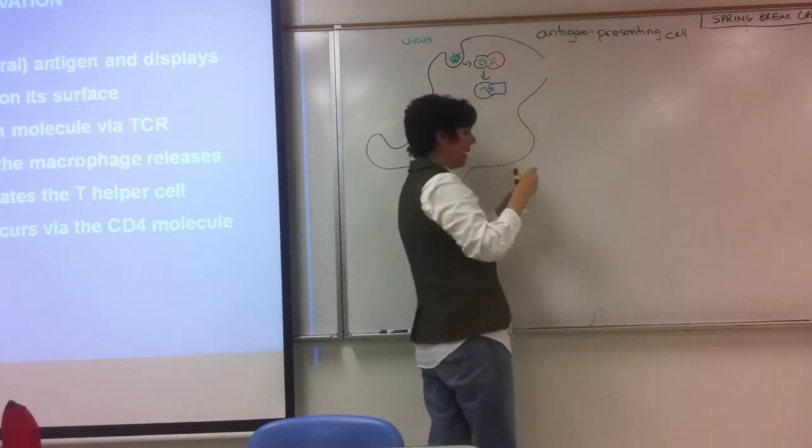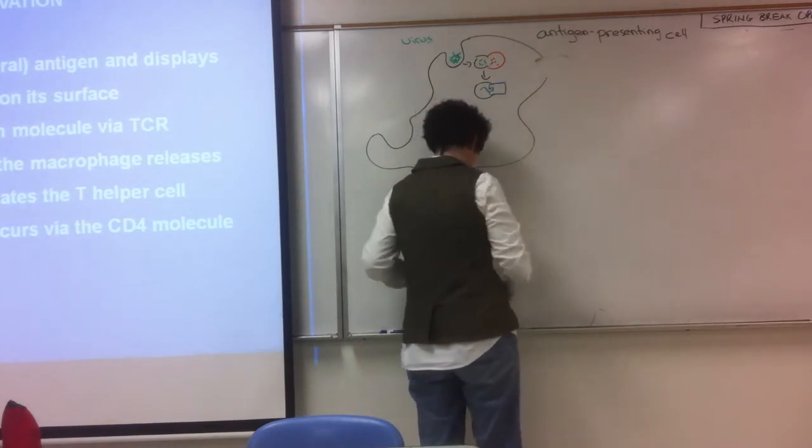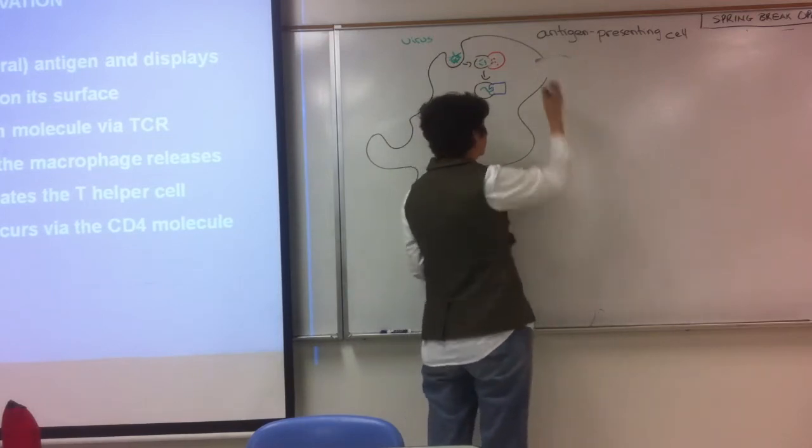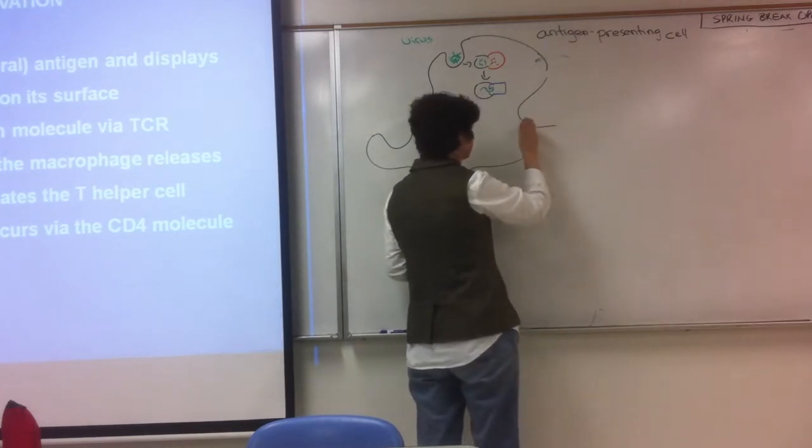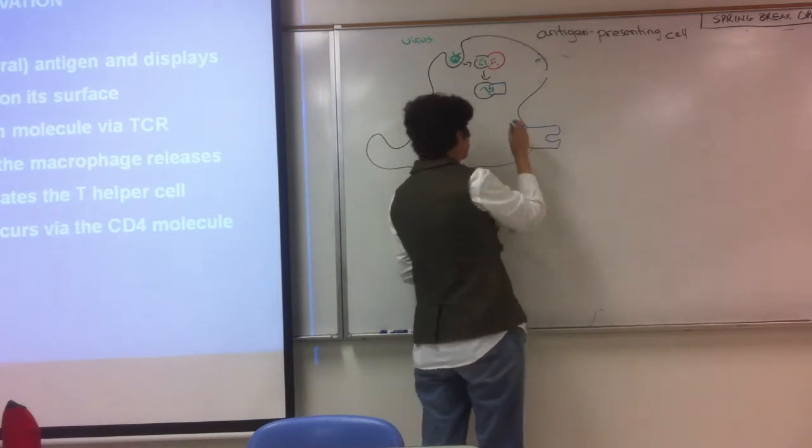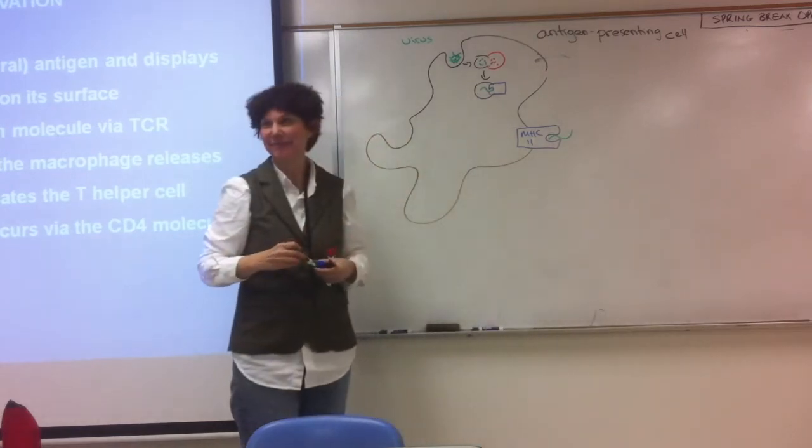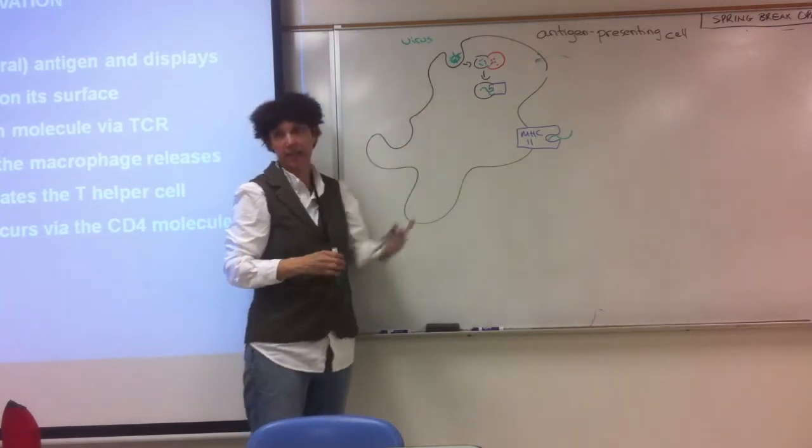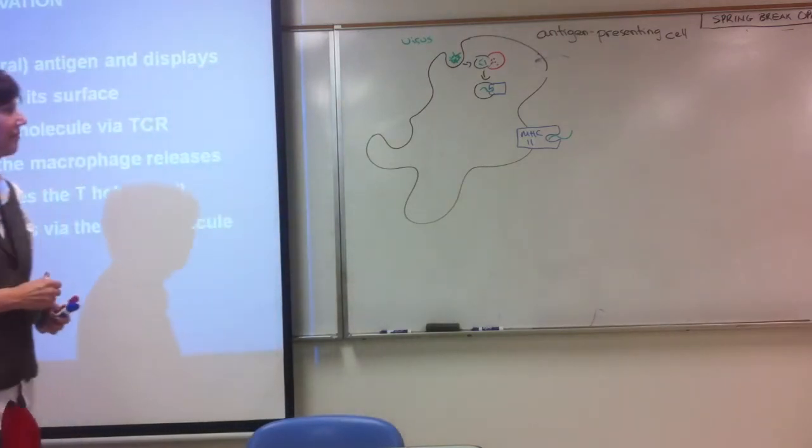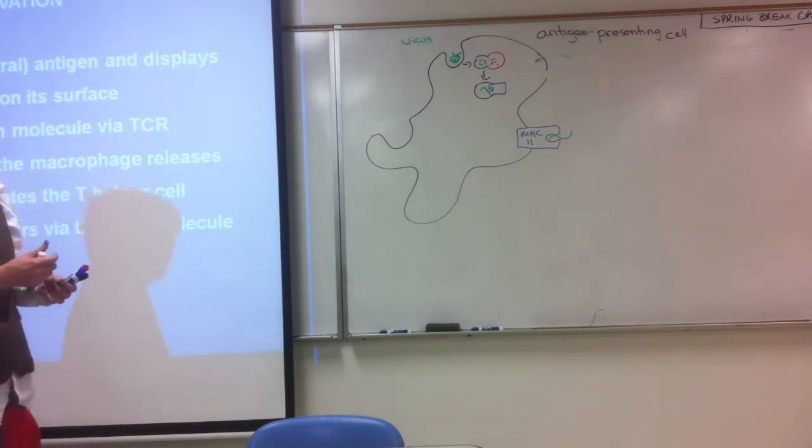And that MHC-2 molecule will be inserted into the plasma membrane. Actually, let me do it a little bit lower here. Think about my finished product. So, this is MHC-2 with an exogenous peptide, right? It came from outside the cell. So, it's phagocytosis. It wasn't a protein that the cell made for the virus.